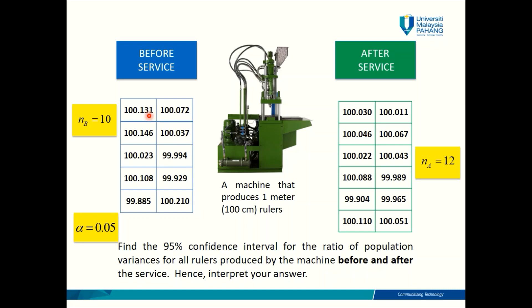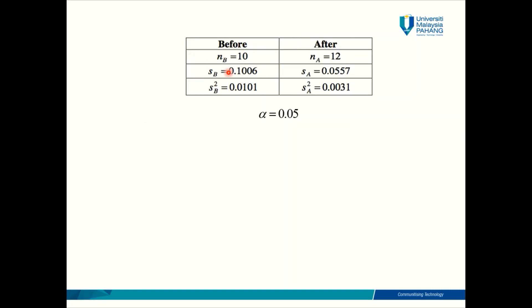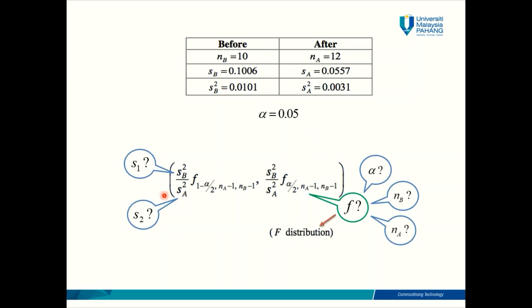Be careful — do not mistakenly select the option for population standard deviation. After using your calculator, you'll get S for each population. You can then square those values to get the sample variance. So now we have the sample variances, alpha, and both sample sizes. What's left to do is find the critical values.